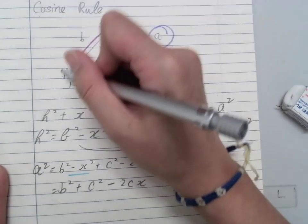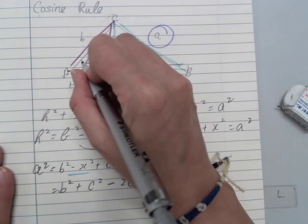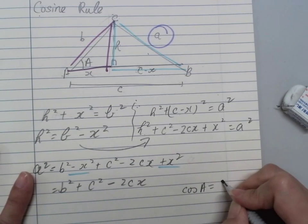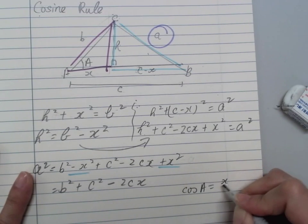Now we look back to our triangle. I need a cosine. I got given angle A. So cos A will be equal to X over B.